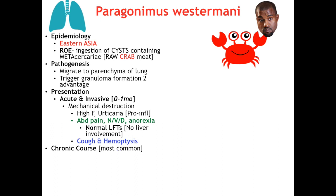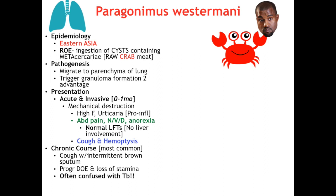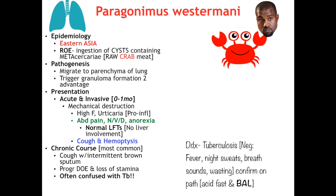Cough and hemoptysis are the most common acute presentation of paragonimiasis — true hemoptysis from the destructive fluke migration to the lung. In the chronic course, which is what we're most likely tested on, the presentation is a cough with intermittently brown sputum. This brown sputum is not blood — it is due to eggs of P. westermani being excreted in such large numbers into the sputum that it gives it a brown tinge. Chronic paragonimiasis presents with chronic productive cough, progressive dyspnea on exertion, and loss of stamina, and is often confused with TB. The differential should include TB, but we're lacking fever, night sweats, and adventitious breath sounds in the chronic course.